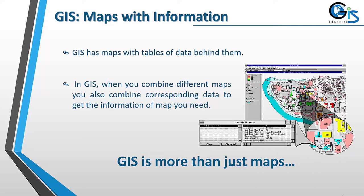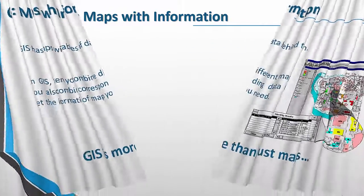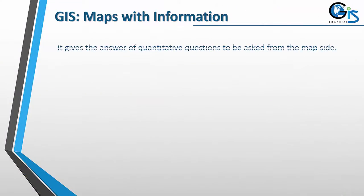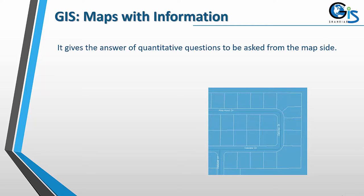GIS maps with information — GIS has maps with tables of data behind them. In GIS, when you combine different maps, you also combine the corresponding data to get the information you need from the map. So GIS is more than just maps; it gives answers to quantitative questions asked from the map.